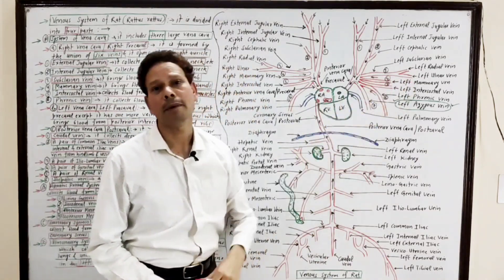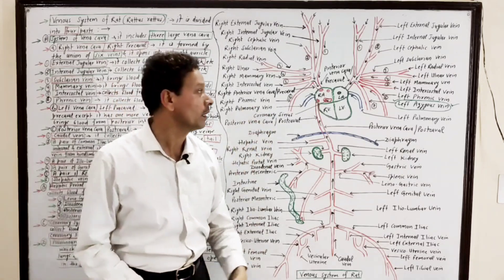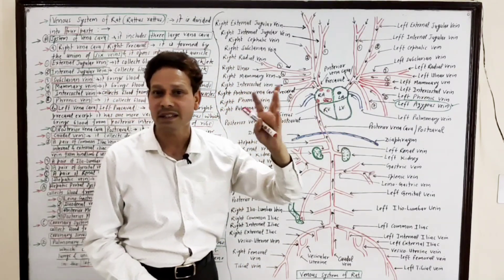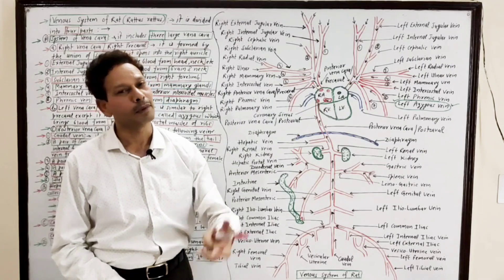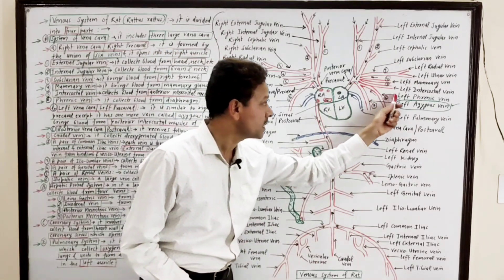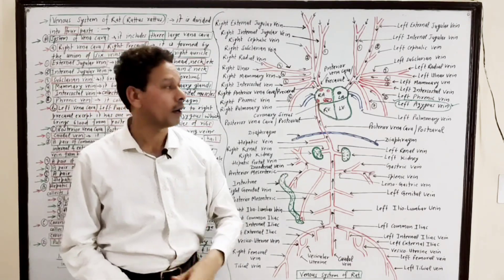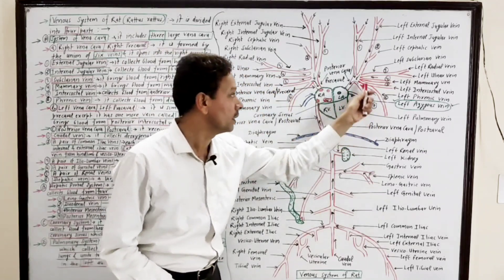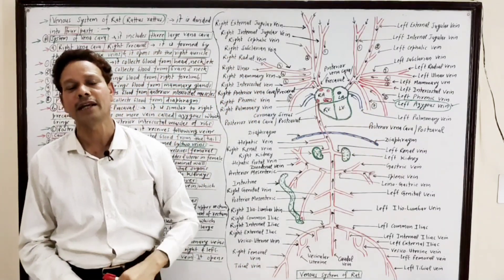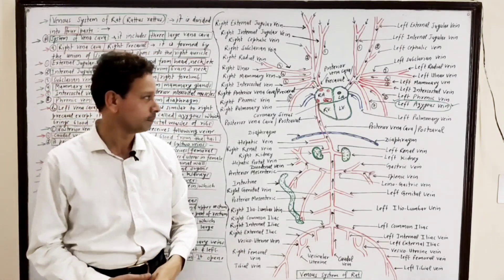The fourth is the left mammary vein, which brings deoxygenated blood from the left side of the mammary glands. The fifth is the left intercostal vein, that brings blood from the anterior intercostal muscles of the ribs. The sixth is the left phrenic vein, that brings blood from the diaphragm. And the seventh additional vessel on the left side is the left azygous vein, which brings blood from the posterior intercostal muscles of the ribs.